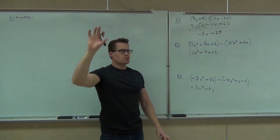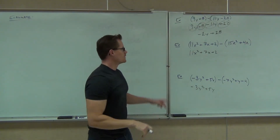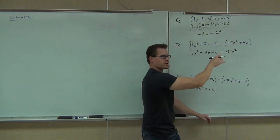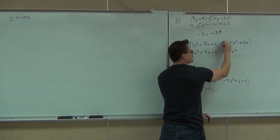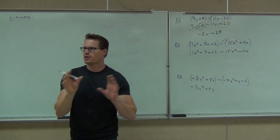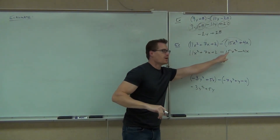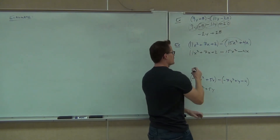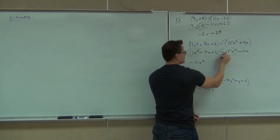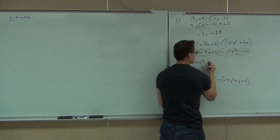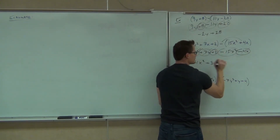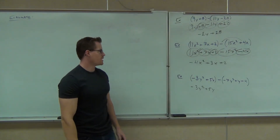Raise your hand if you got negative 2y plus 28. Good job — that's great. Okay, next up: same thing happens. We're going to get our negative 15x squared, but we're not going to have plus 4x anymore. That negative is going to change that sign to a minus 4x — that's really the key part, the second parentheses. The first one everyone's getting right; that's the one you need to focus on. Our like terms give us negative 4x squared plus 3x plus 2.